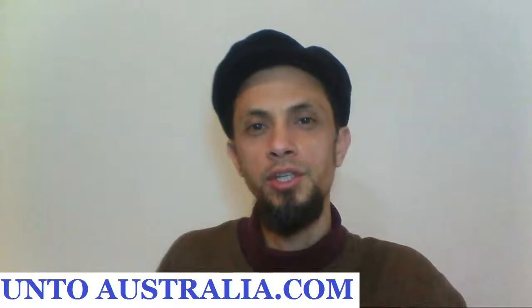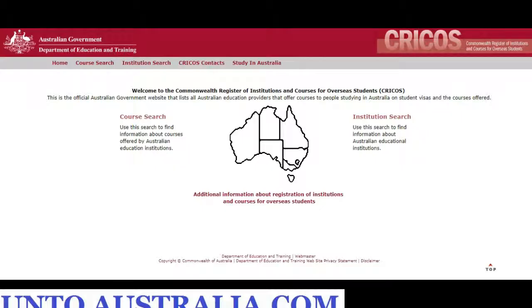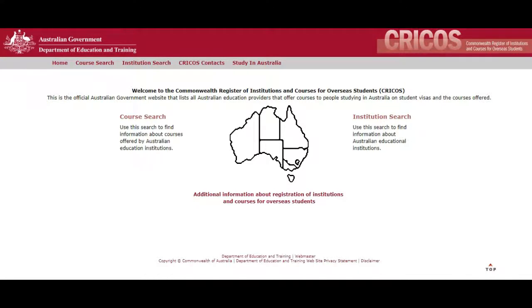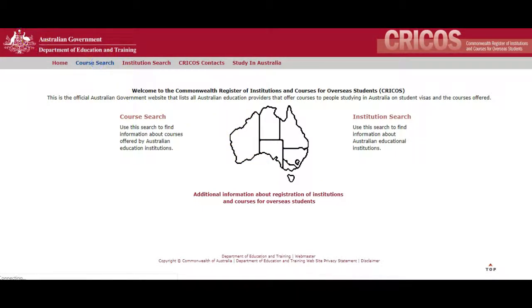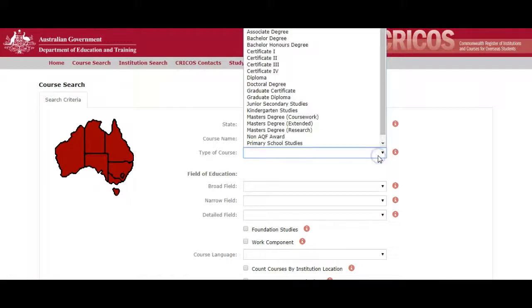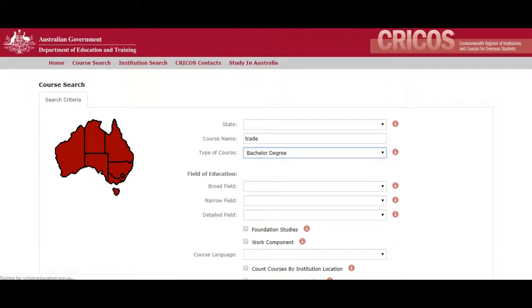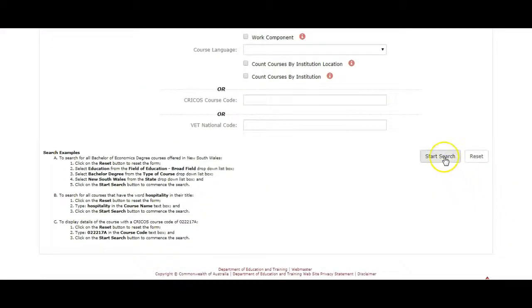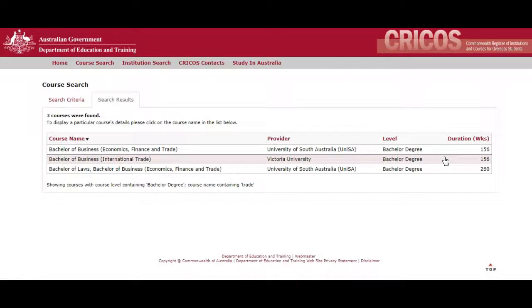Now follow me on my screen as I show you the steps on how to find the best course. Today I will show you how to find the best trade courses in Australia for university and bachelor degrees. Go to CRICOS at education.gov.au — on the home page you can search by institute or by course, and you can choose a state. We will search by course, type 'trade' in the course name, choose 'bachelor degree' as the course type, scroll down, and click search.